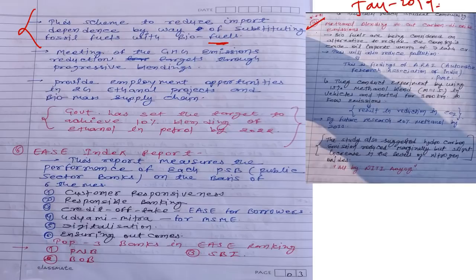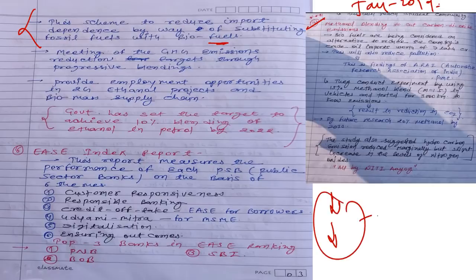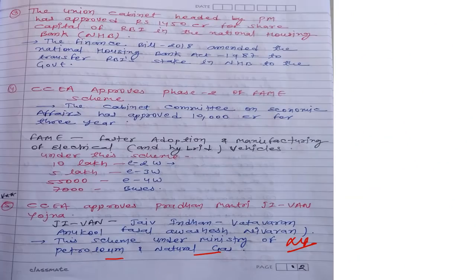GOBAR-DHAN is connected to methanol blending, which was discussed as the 22nd current affair in January 2019. Methanol blending means mixing methanol with petrol — this reduces import costs (since petrol is imported) and reduces CO2 emissions. To implement methanol blending and biofuel policies, the government launched GOBAR-DHAN scheme.